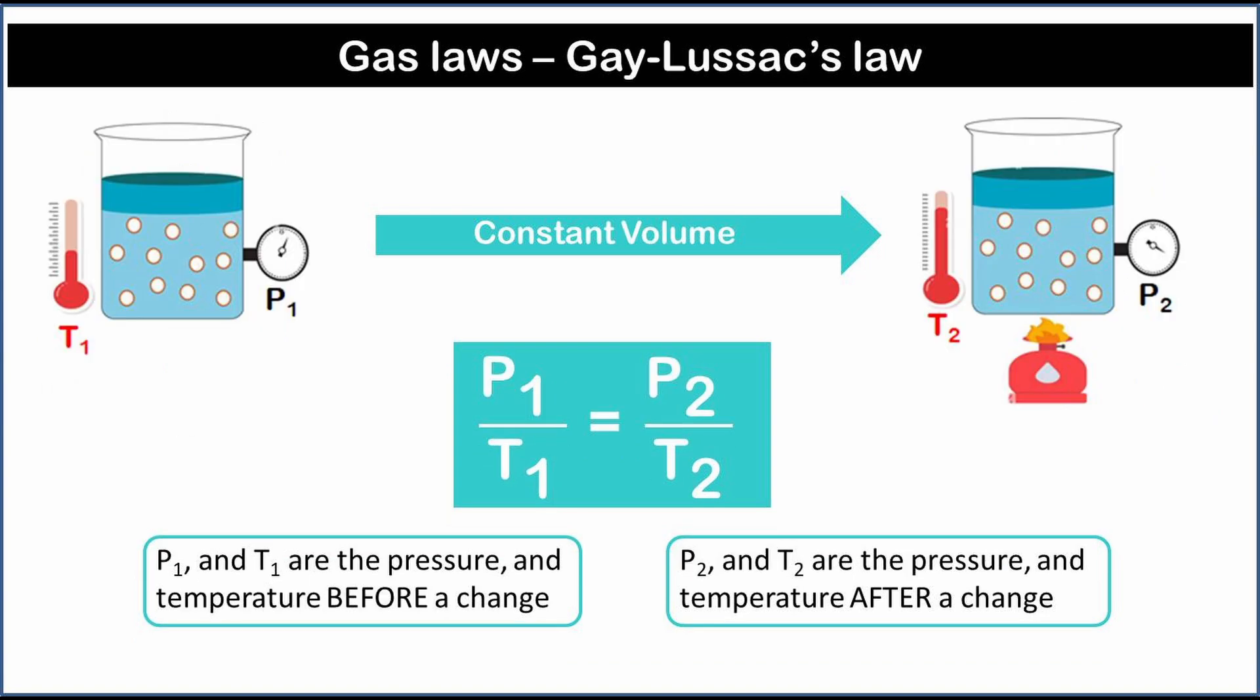Gay-Lussac found that in an experiment where the volume of the gas is kept constant, the ratio of the pressure to the temperature remains constant. In other words, if you heat a gas in a sealed container, the temperature and pressure increase. The ratio of pressure to the temperature in Kelvin will be the same before the change and after the change. We can also say that the pressure of a gas is directly proportional to the Kelvin temperature, if the volume remains constant.